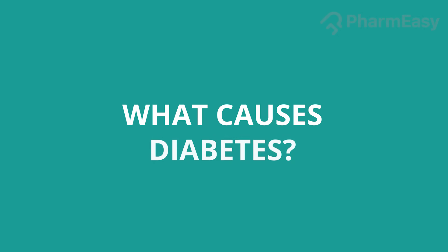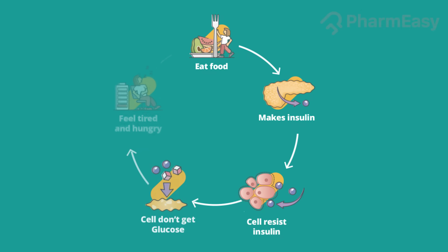So let's understand what causes diabetes. Diabetes occurs due to the inability of the body to produce enough insulin, or the inability of the body to use insulin effectively — which is also known as insulin resistance — or it could be both.